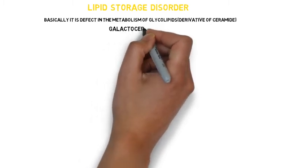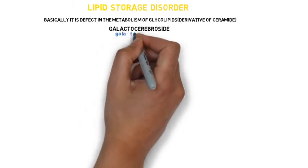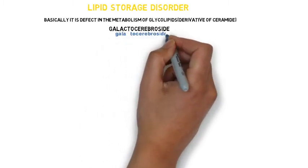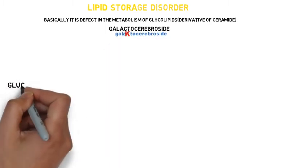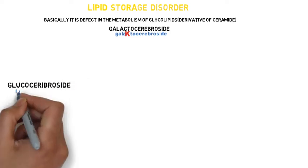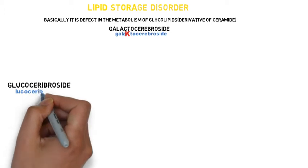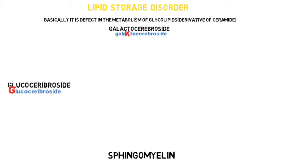The first is galactocerebroside — for memorizing this we will write galactocerebroside with a capital K. Then we have glucocerebroside — for memorizing this we will write glucocerebroside with a capital G. Then we have sphingomyelin — for memorizing purposes we will write this with a capital N.